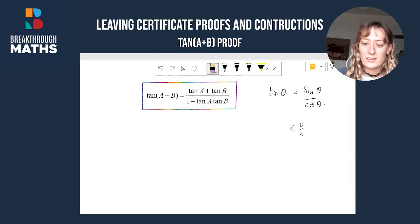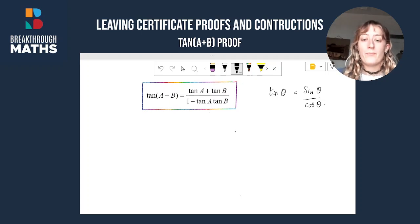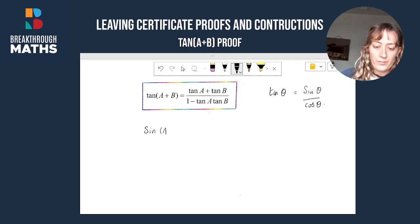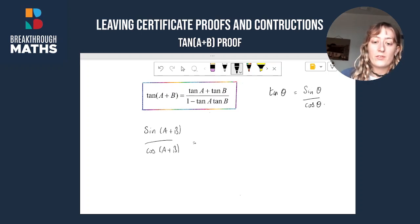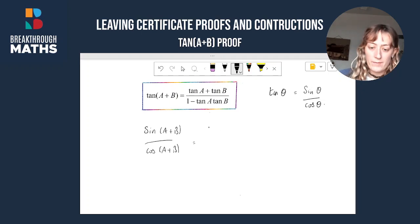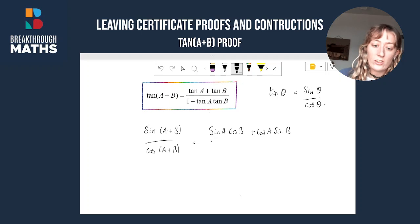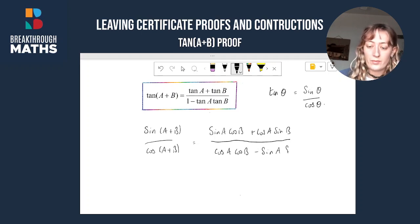So we're going to make heavy use of this: tan θ is equal to sin θ all over cos θ. Let's rewrite tan(a + b) as sin(a + b) over cos(a + b), and see where that gets us. So we're going to have sin(a + b) all over cos(a + b). You can find these formulas in your log tables, and I also have proofs of these formulas in other videos: sin(a + b) is equal to sin a·cos b plus cos a·sin b, and cos(a + b) is equal to cos a·cos b minus sin a·sin b.